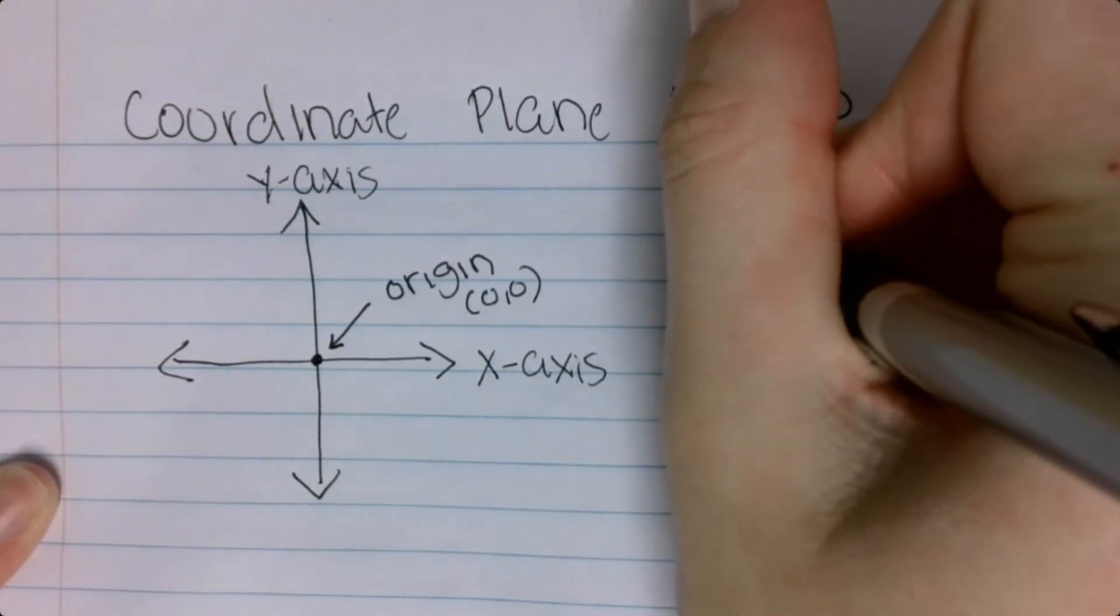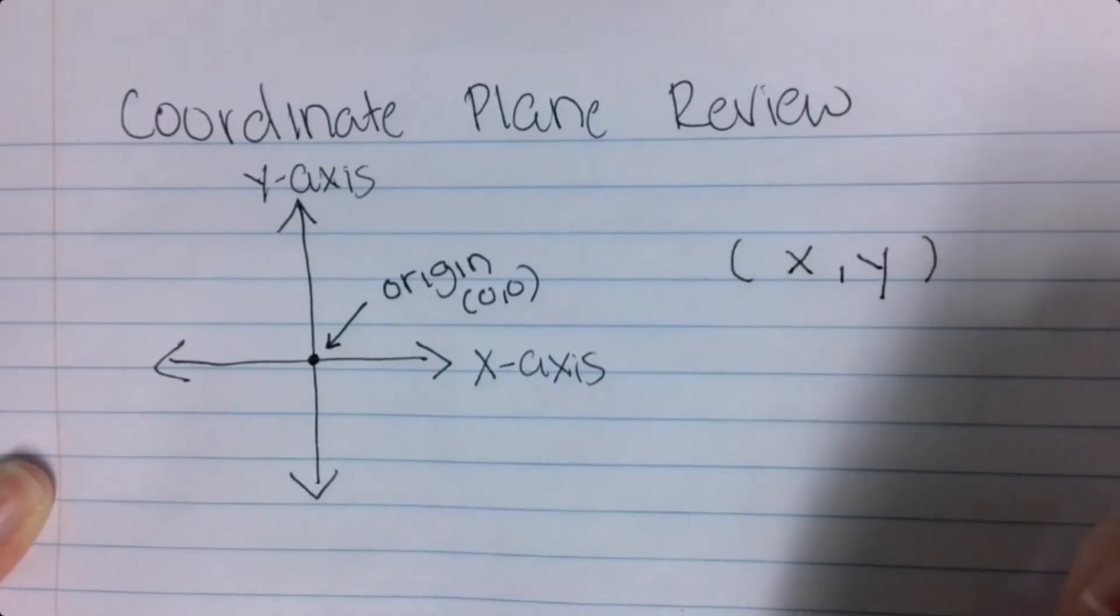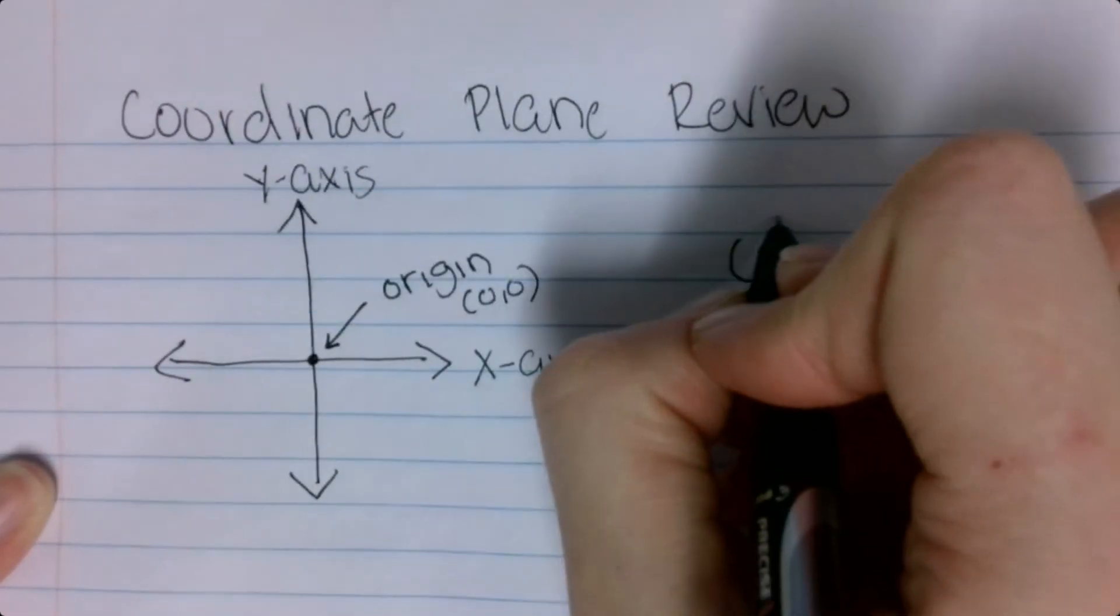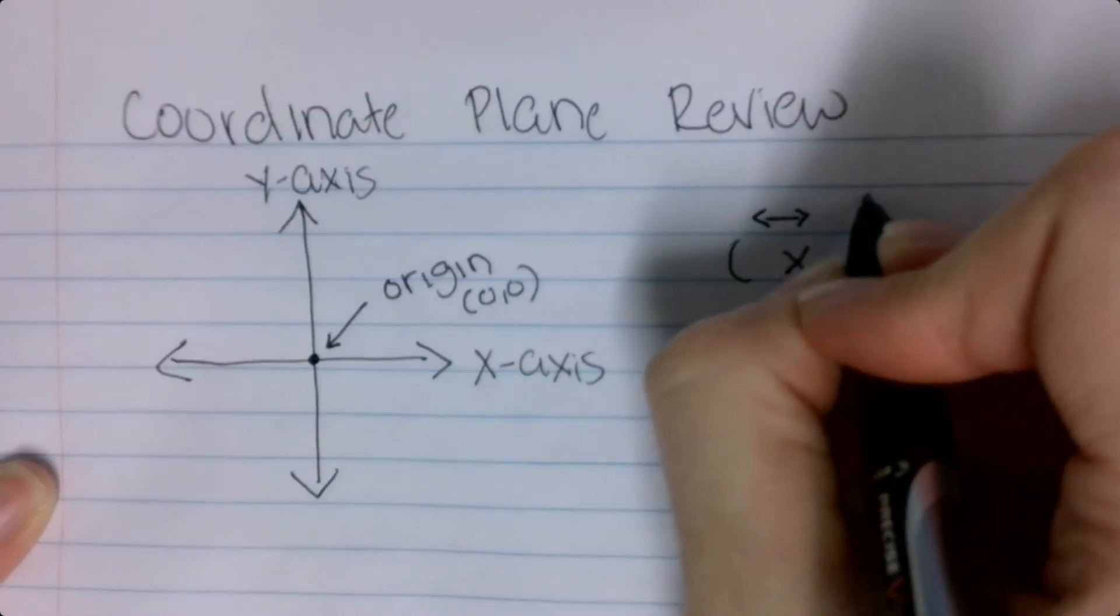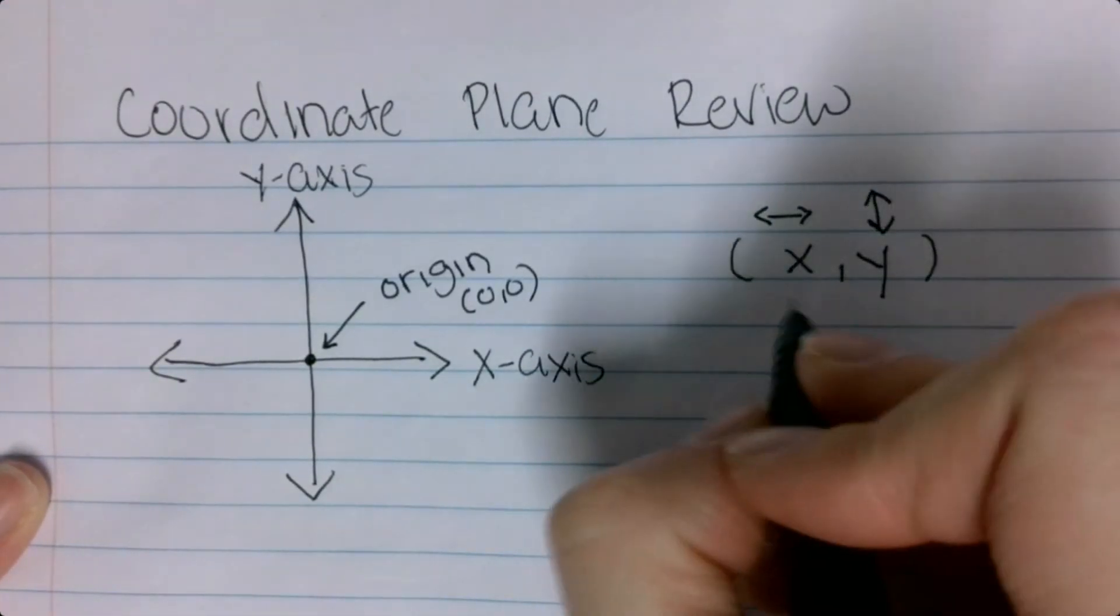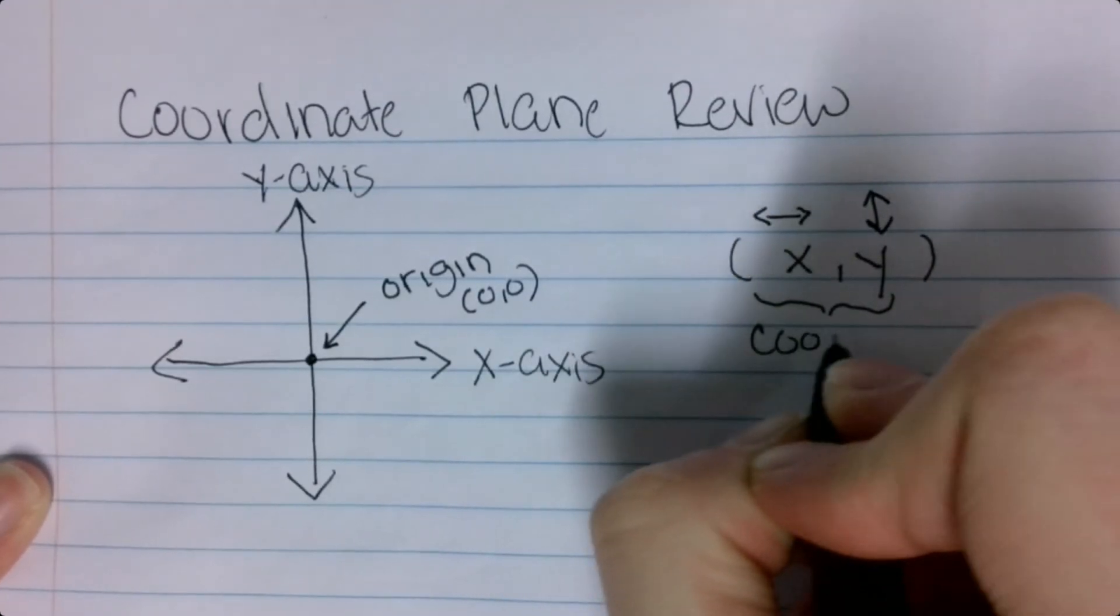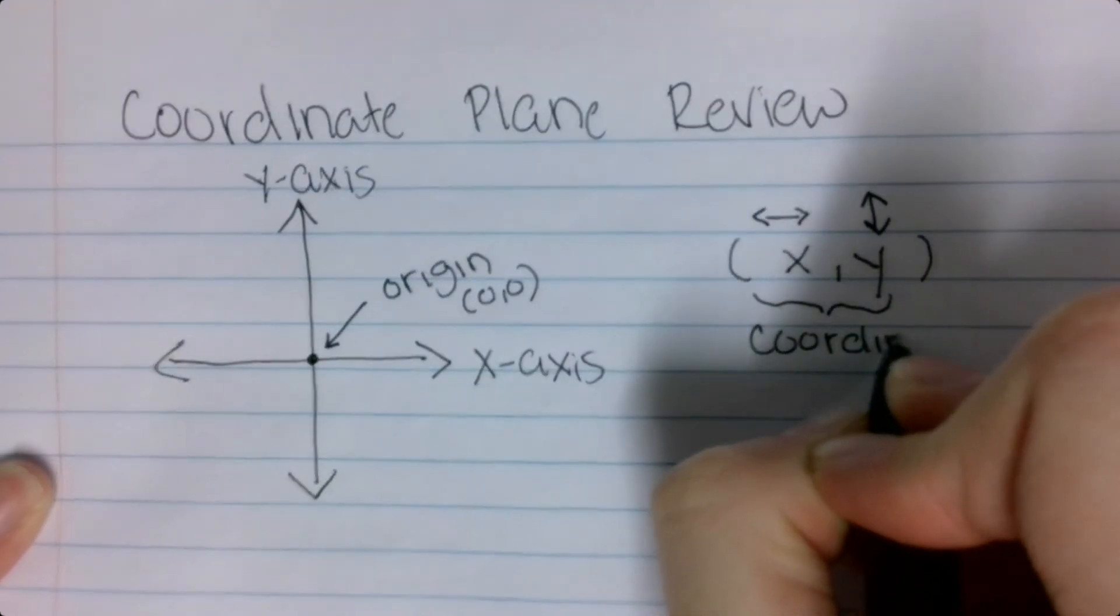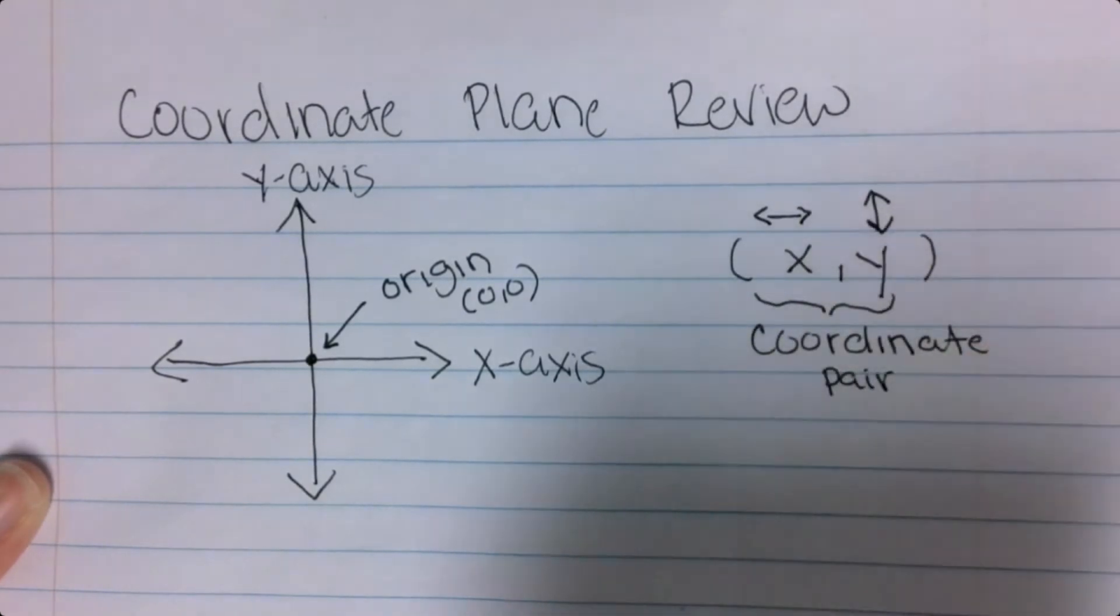We also need to remember that it's always x, y, where x moves left to right and y moves up and down. This thing right here is called a coordinate pair.